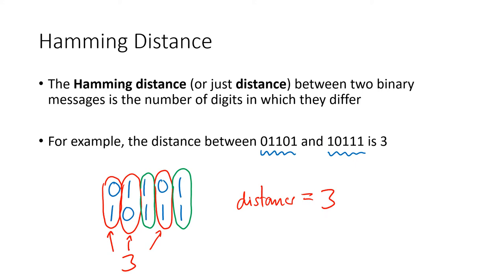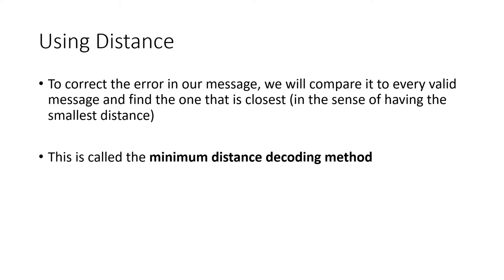To use this distance concept to try to correct errors, we're going to compare the message that we received to every code word in our dictionary, and try to find the one that's closest — the one with the smallest distance. That will be the message that we think we were probably supposed to have gotten.